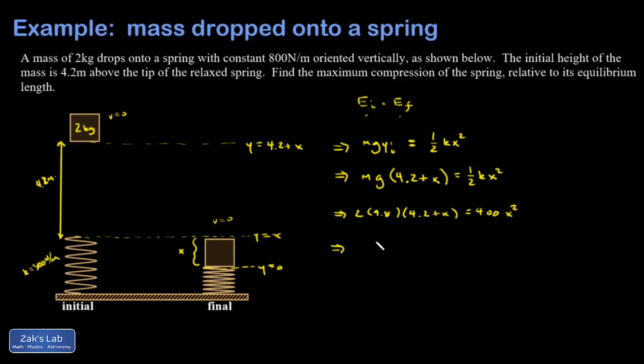My spring constant was 800, so half of that is 400. And I would prefer a to be a positive number, so I'm going to move everything to the right side. 400x squared, and then I have an x term. That's 19.